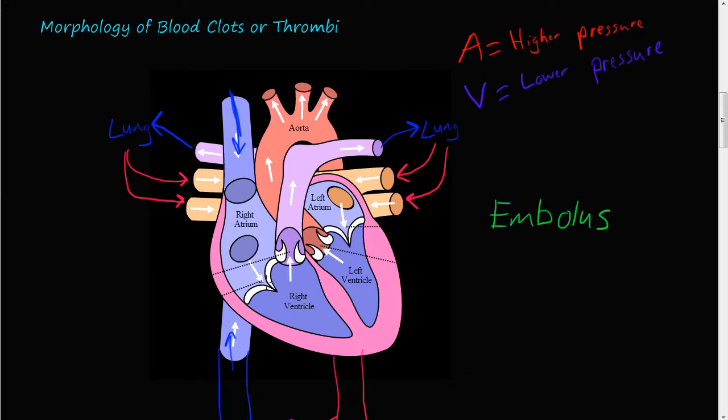Blood passes the tricuspid valve into the right ventricle. The right ventricle then squeezes and pushes blood up into the pulmonary arteries. The pulmonary arteries then take blood to the lungs where the blood is oxygenated and CO2 is released out into the atmosphere.